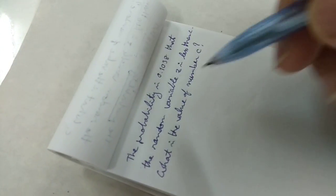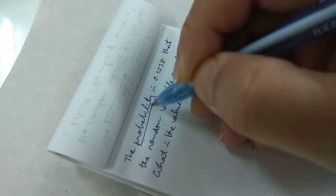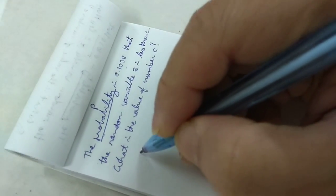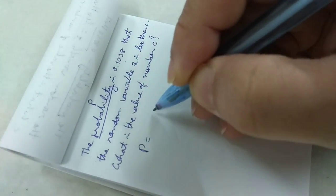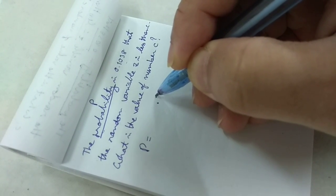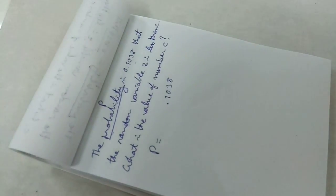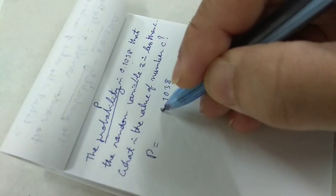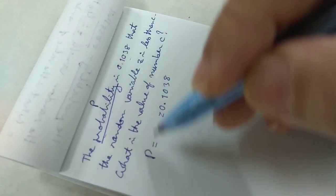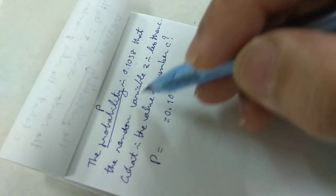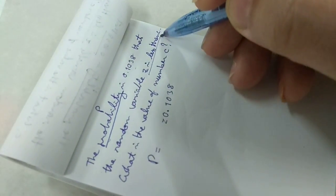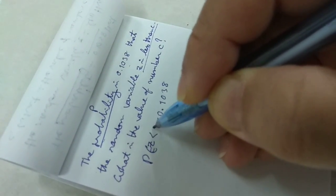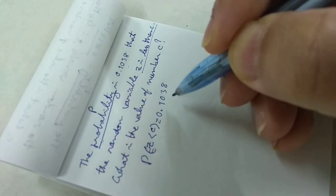The probability P is 0.1038. P for what? It's the probability that Z is less than C. So you write it like this: P(Z < C) equals 0.1038.